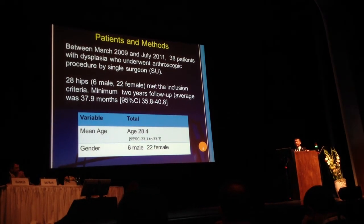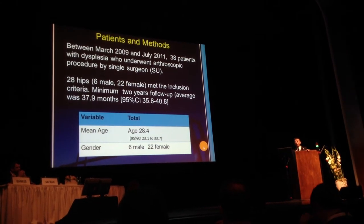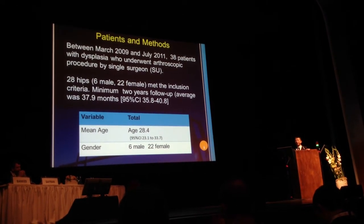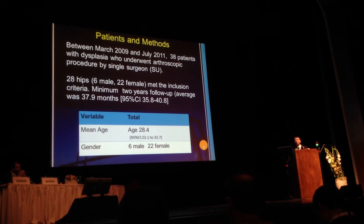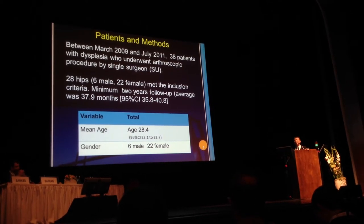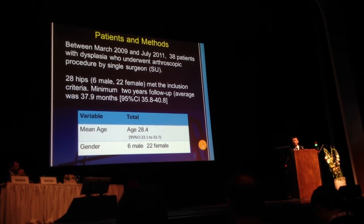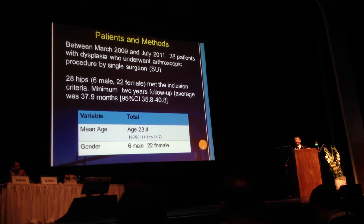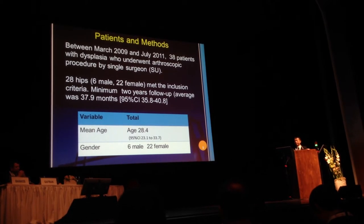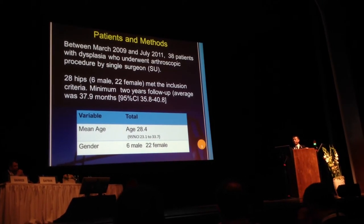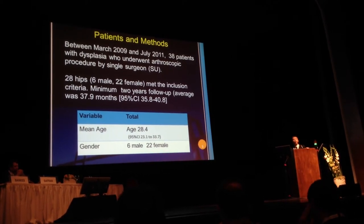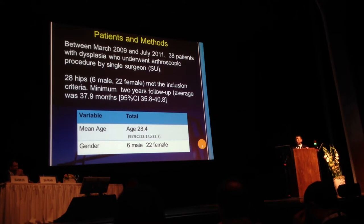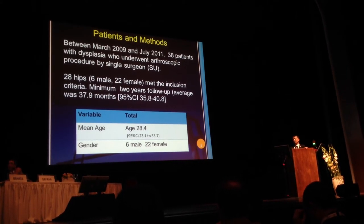Between March 2009 and 2011, 38 patients with dysplasia underwent hip arthroscopy by a single surgeon. Twenty-eight hips — 6 male and 22 female — met inclusion criteria with a minimum 2-year follow-up of 37.9 months.